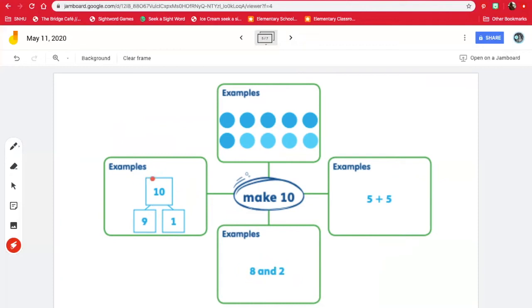Here's another way. They're using a number bond. So the total is the top, which is 10. And a part is nine. And another part is one. So here we have one part, another part, and the whole. Part, part, whole, or a number bond. And the total is 10 because we want to make 10.